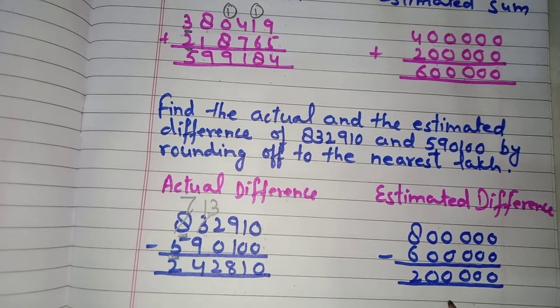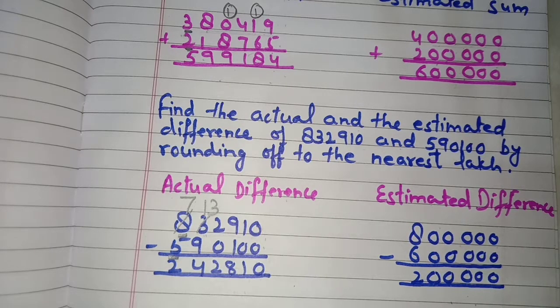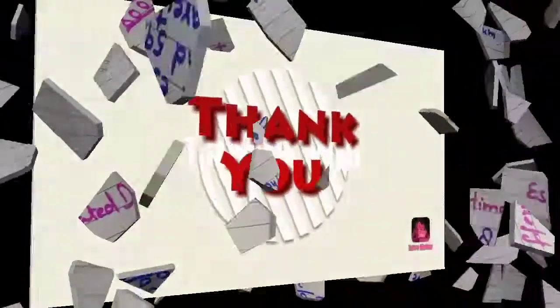We now subtract these numbers to find the estimated difference, which is 2 lakh. So dear students, this is how you can find the actual sum and actual difference by rounding off the numbers.